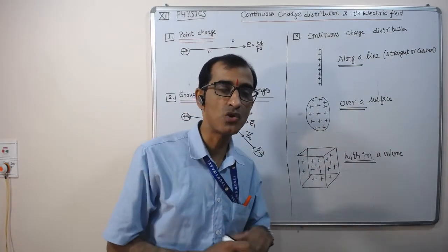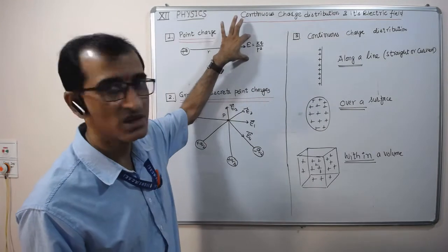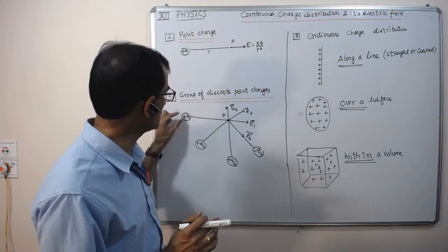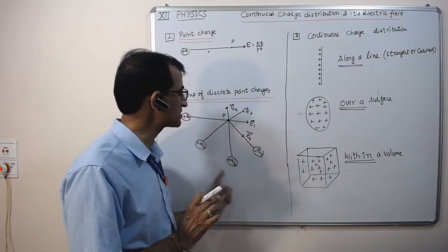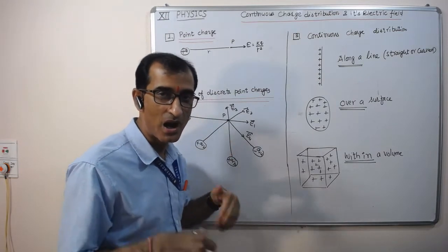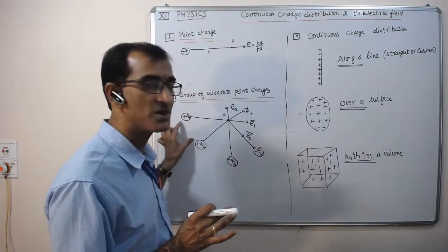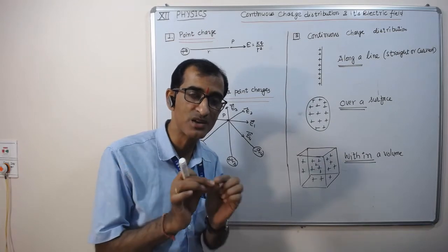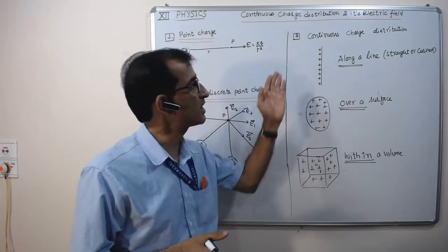In brief, we now have two types of systems for finding the electric field. Number one, single point charge, using E = kq/r². Number two, group of point charges, which are discrete charges at greater distances — we find their resultant field by vector sum. Today we introduce a new charge system: continuous charge distribution, where billions of charges are distributed along a line, area, or volume with very small separation.